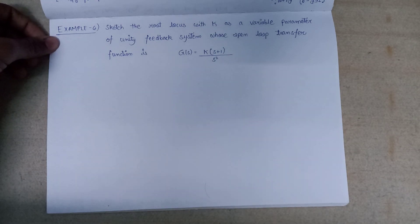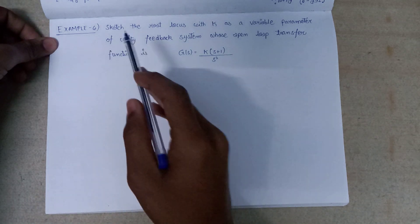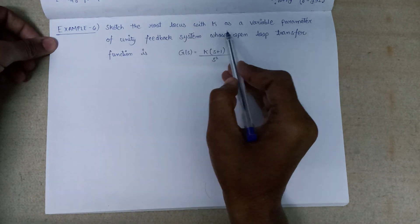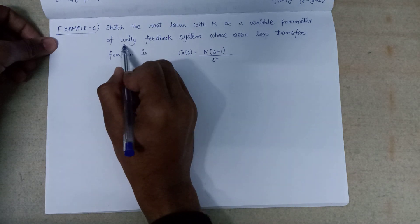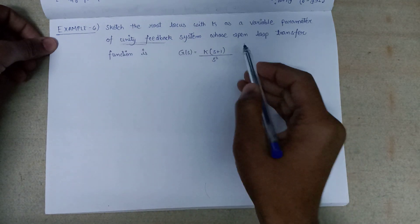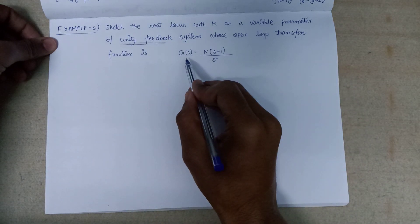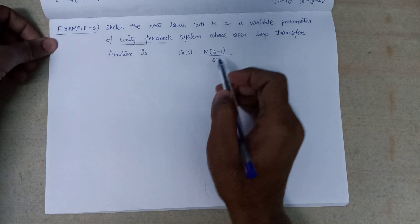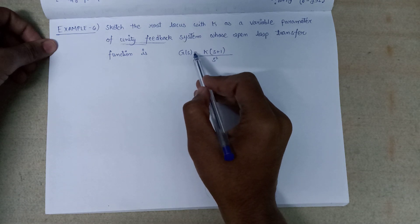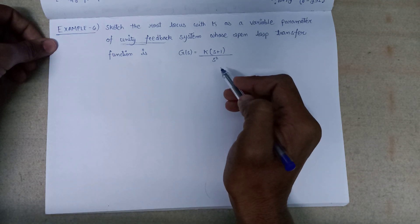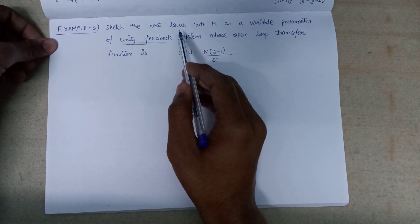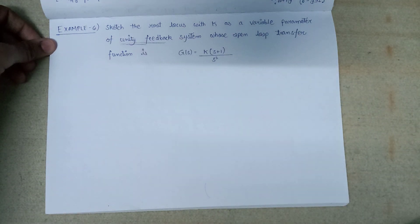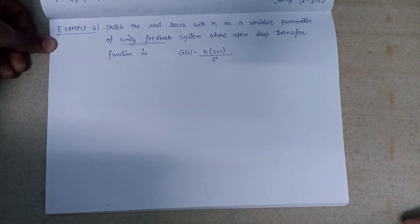Welcome all. In this lecture we are going to deal with a new example, that is example number 6: sketch the root locus of k as a variable parameter of a unity feedback control system whose open loop transfer function is given as G(s) = k(s+1)/s². We will do this by following all 9 steps that we discussed in the previous videos.